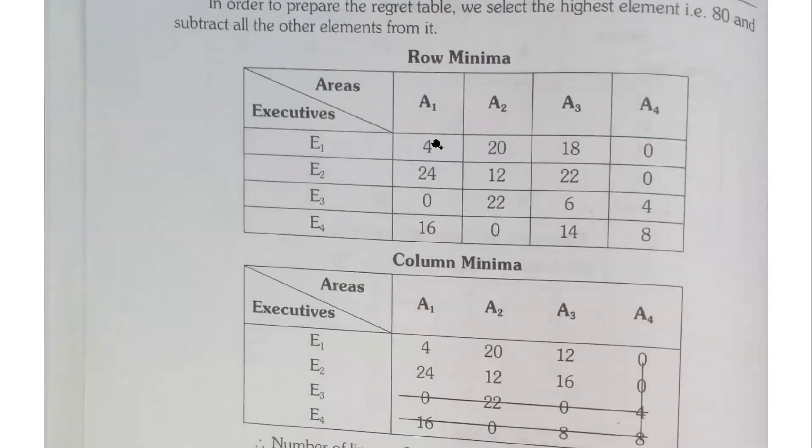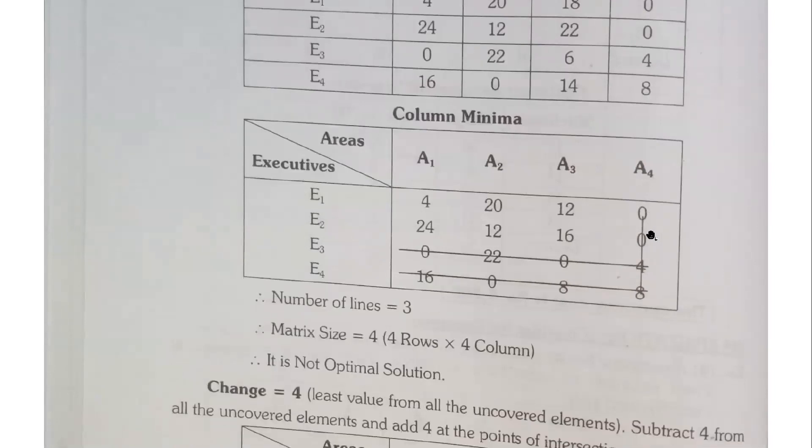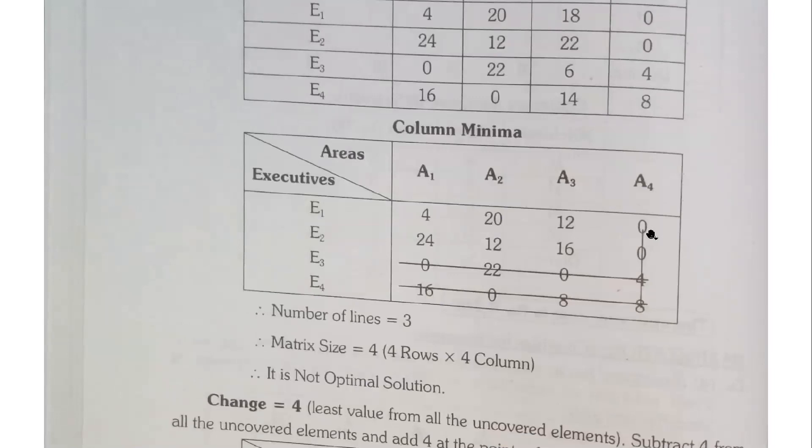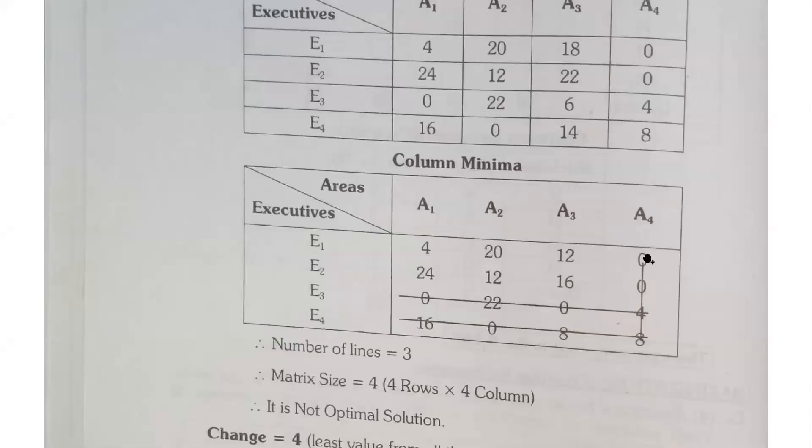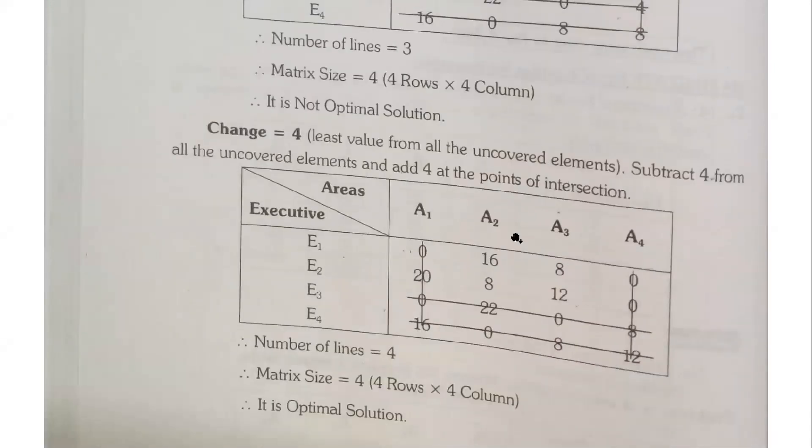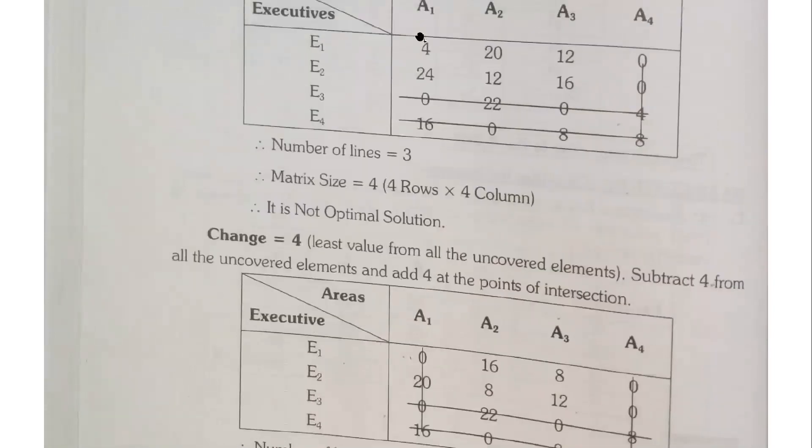After doing column minimization, we have a number of zeros here. Number of lines are 3 and number of columns and rows are 4, so this is not an optimal solution. Next, what we will do is we will select least value from all the uncovered elements. We will subtract 4 from all the open values and add at intersection points.